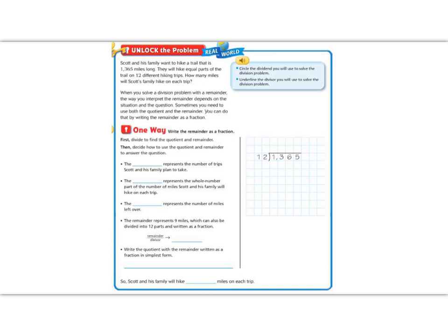Let's begin with the blue box. Circle the dividend you will use in the division problem. The dividend is the big number we're going to divide into, 1365. The next one says underline the divisor. The divisor is 12. That's what we're going to divide by.